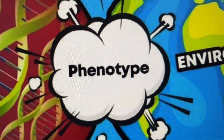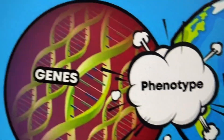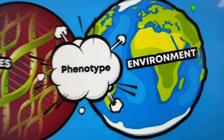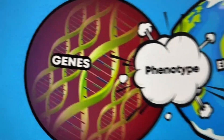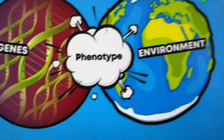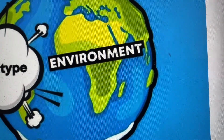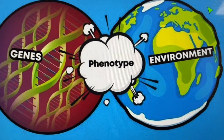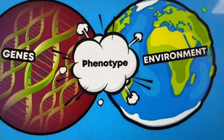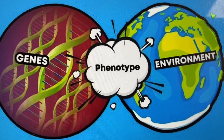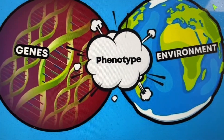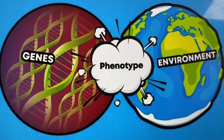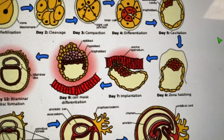Your phenotype is the way you look — it's all of your traits, and of course they're determined by genes. But it also makes sense that they're affected by the environment. For example, you could have the genes to grow really tall, but if you don't get enough food, you're never going to have the tall phenotype no matter what genes you have. So genes and environment work together, and it's how they work together that we're going to focus on today.